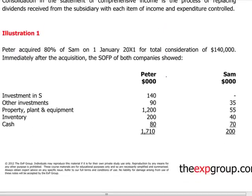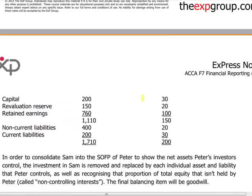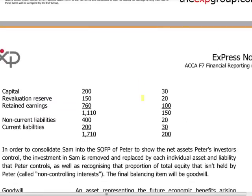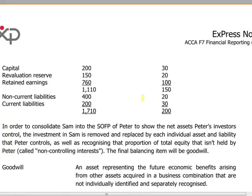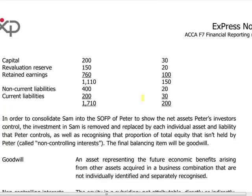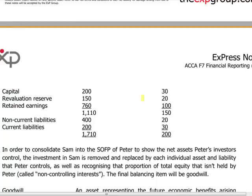Let's look at Illustration 1, where Peter acquired 80% of Sam on 1st January 20X1 for a total consideration of $140,000. Immediately after the acquisition, the statement of financial position of both companies shows the following: Peter has an investment in Sam, and both have other investments, property plant and equipment, inventory, cash, share capital, revaluation reserve, retained earnings, and non-current and current liabilities.